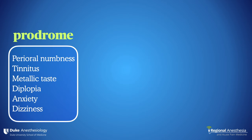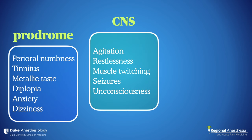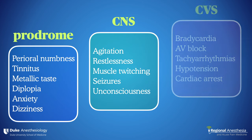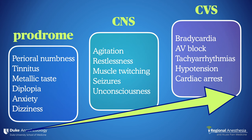Our understanding of how LAST presents has evolved over the last several decades, especially in the era of ultrasound and fascial plane blocks. The classic presentation was based on rising plasma local anesthetic levels and started with prodromal symptoms: numbness around the mouth and tongue, ringing in the ears, a metallic taste, and other non-specific neurologic items. As plasma concentration increased, the patient would become agitated, restless, start to twitch, and eventually seize.